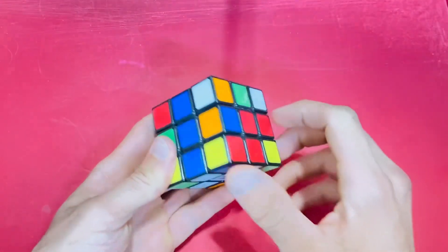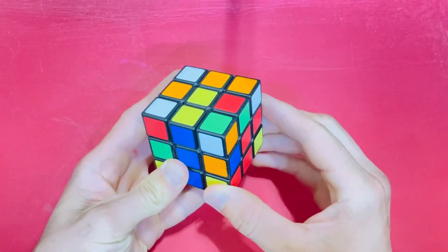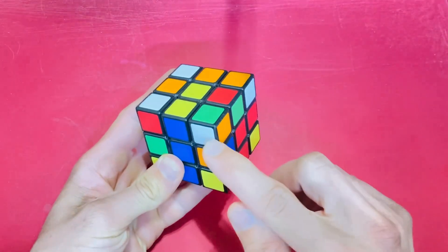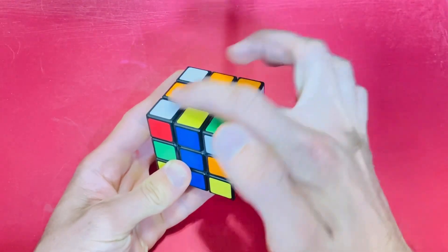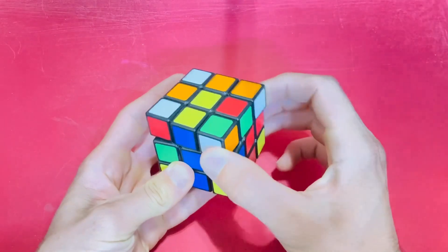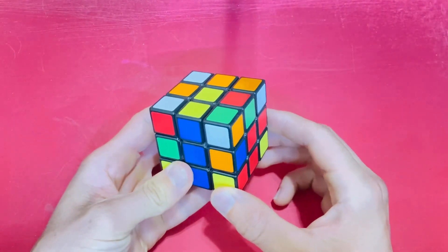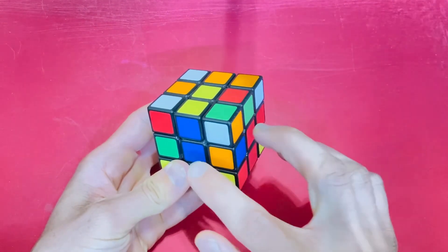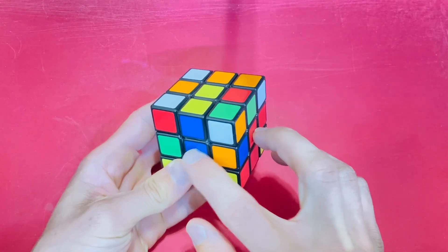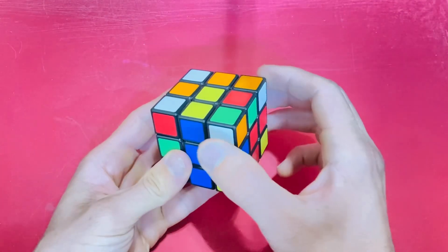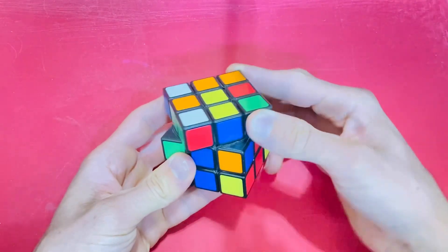Hold the white cross facing down. All your white corners should be in the top layer. Now look at these two colors. Find the corner that has those two colors on it by rotating the top layer.